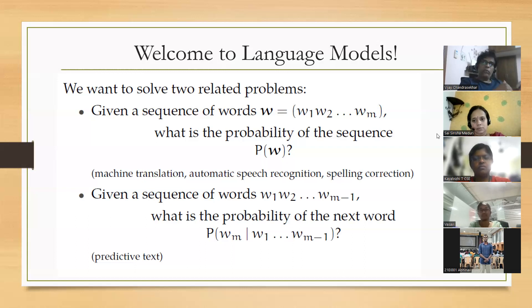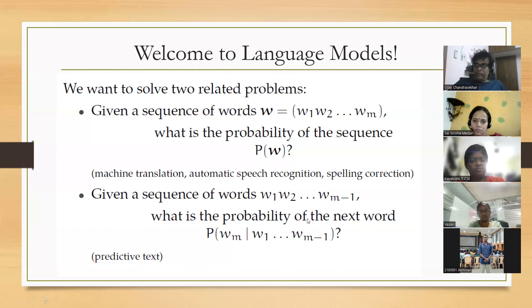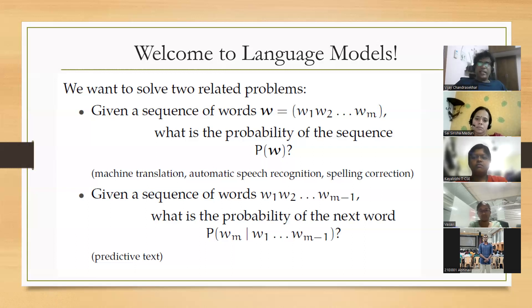That's one problem we're trying to solve: given a sequence of words, what is the probability of that sequence? The next problem is: given a sequence of words, what is the probability of the next word? That's conditional probability — given w1, w2, all the way up to wm-1, what is the probability of the word wm? We again need the entire corpus — every published book, anything and everything written on the internet.